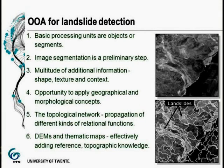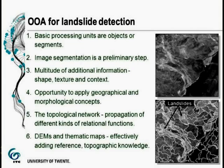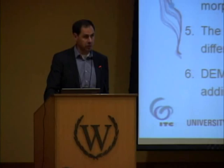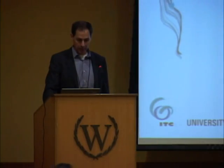The processing is quite straightforward. We consider objects to be the most logical, natural basis for this type of work. So everything starts with image segmentation, and then we start bringing in our knowledge: shape, texture, context, and so forth. It's really an opportunity to bring in both our geographic information and everything we know about morphology and morphometry. That is the basis for an iterative process tree — a topological network that brings in this type of information and knowledge successively. Making use of as much information as possible: if you have a DEM, that's going to be of great advantage; if you have geological or soil information, you could also use that.